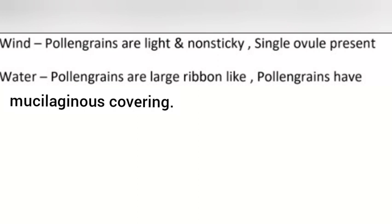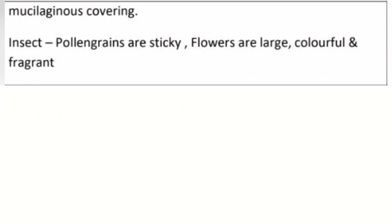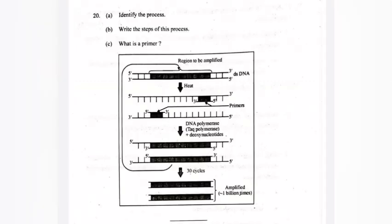Pollen grains have mucilaginous covering. Insects - pollen grains are sticky, flowers are large, colorful and fragrant. Question 20: A - Identify the process. B - Write the steps of this process. C - What is a primer?